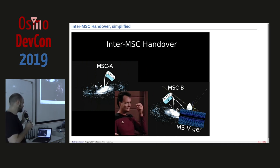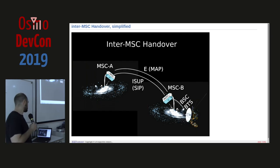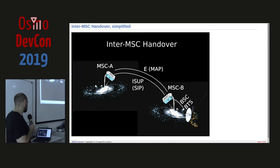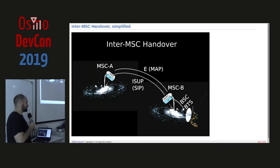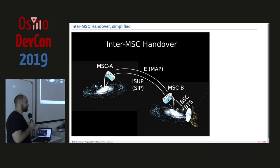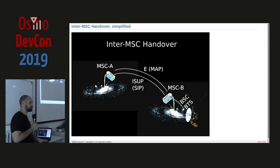For some obscure reason the MS Voyager has now ended up in another galaxy. The specs describe an E-interface link which is MAP over TCAP — which Vadim also mentioned for SMS — and an ISUB link for the voice, which is basically another SIP call to forward the voice. The first MSC is still responsible for managing the subscriber. We don't use MAP over TCAP; we use GSUB, and we route it via the HLR.